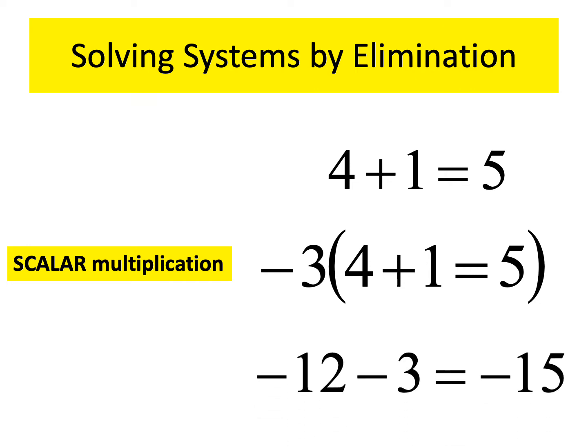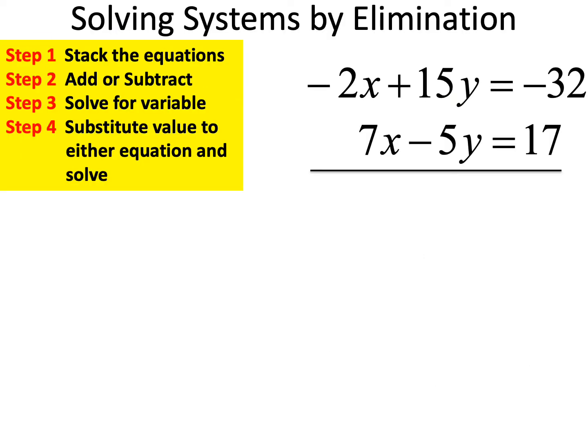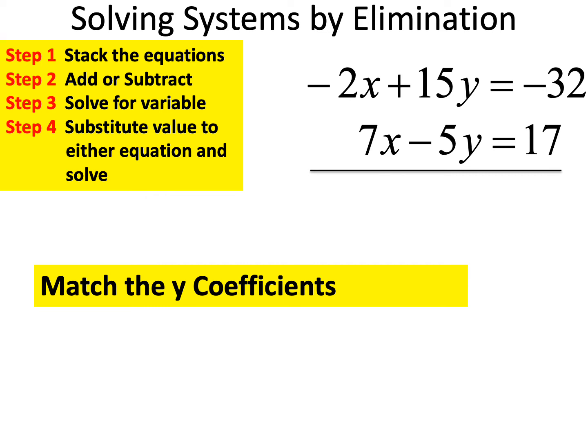When I scale 4 plus 1 equals 5 by a factor of 2, the 4 becomes 8, the 1 becomes 2, the 5 becomes 10. If you start with a true equation you end with a true equation. This also works with a negative number — scaling by negative 3 gives negative 12 minus 3 equals negative 15, which is still true. This is scalar multiplication, and it's what allows us to get around the issue of mismatched coefficients.